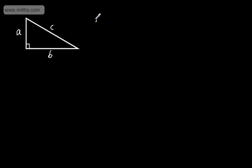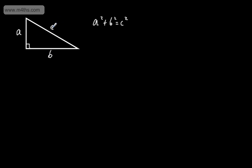Pythagoras' theorem states that A squared plus B squared is equal to C squared. So if I take one of the shorter sides and square it, then take the other shorter side and square it, when we add those two together, it's equal to the hypotenuse squared.